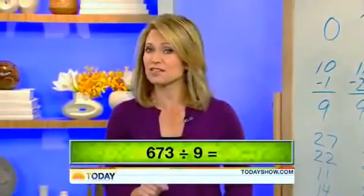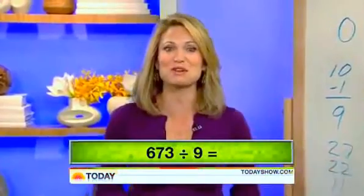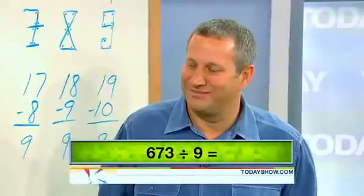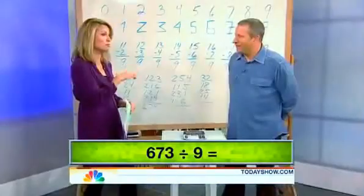How fast can you divide 673 by 9? Well, Scott Flansberg has already done it. He holds the Guinness World Record for the fastest human calculator and he's here to talk about the American Math Challenge. But first we're going to challenge him a bit ourselves.